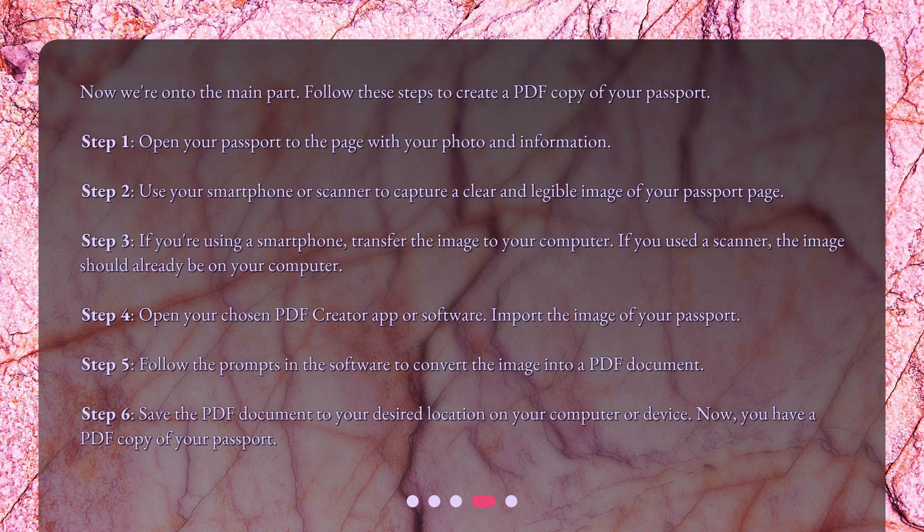Step 4 — open your chosen PDF creator app or software and import the image of your passport. Step 5 — follow the prompts in the software to convert the image into a PDF document. Step 6 — save the PDF document to your desired location on your computer or device. Now you have a PDF copy of your passport.